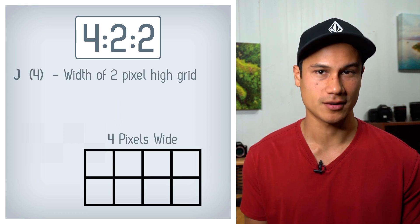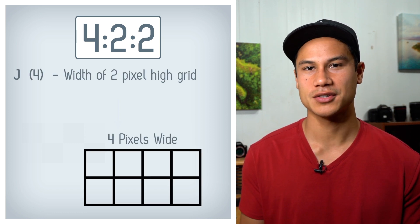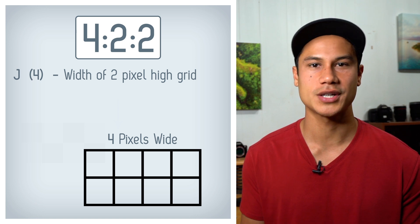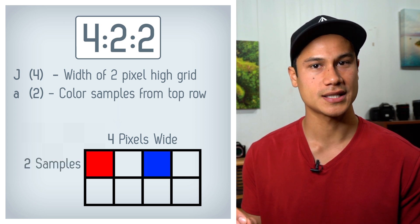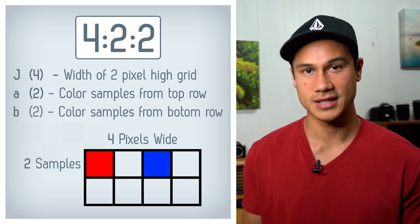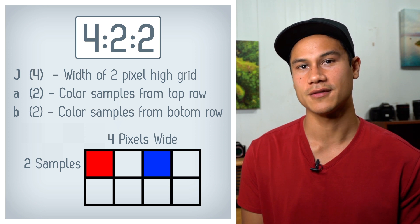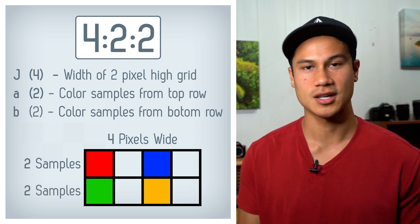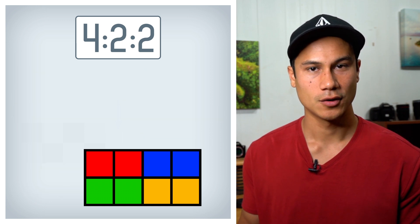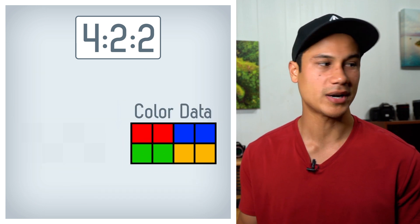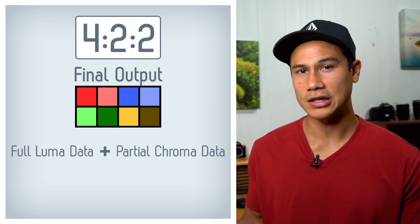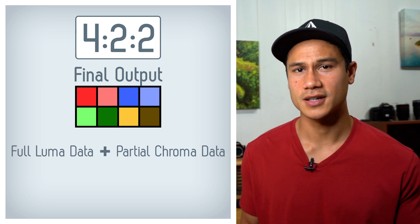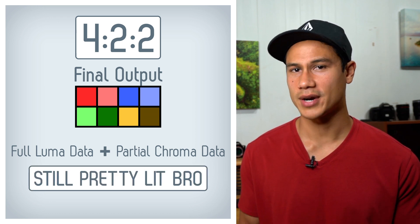Now let's break it down and see what 422 actually means. The first number is your J number — this is usually a 4, and it tells you how many pixels wide we're looking at in a 2-pixel-high grid. The second number, in this case a 2, tells us how many color samples we're taking from the top row. The third number, also a 2, tells us how many color samples we're taking from the bottom row. Then all the empty pixels just copy whatever color data is in the pixels next to them. Once you have all your color data, you combine that with your Y, or your luminance data, and then you get your image. The idea here is that if you combine all of the luminance data with just a little bit of color data, it's actually enough to make an image look pretty great to the human eye.